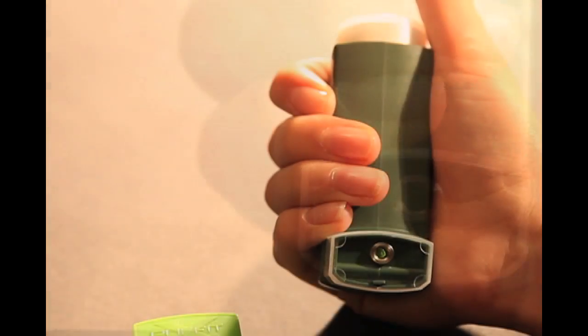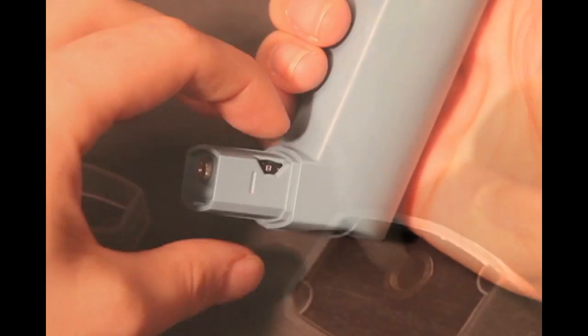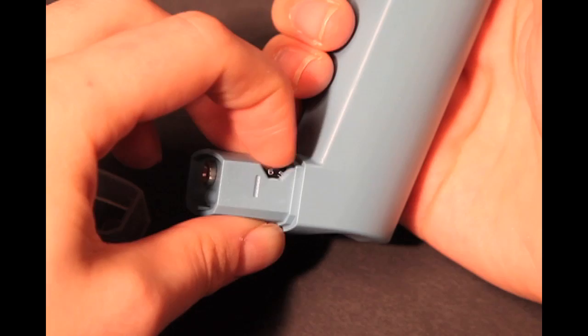When the Puffet-X has reached temperature, the red light will turn green. Now, press the cap to enjoy true forced air vapor. A wide range of temperature settings and fan speed gives the Puffet-X true customization.